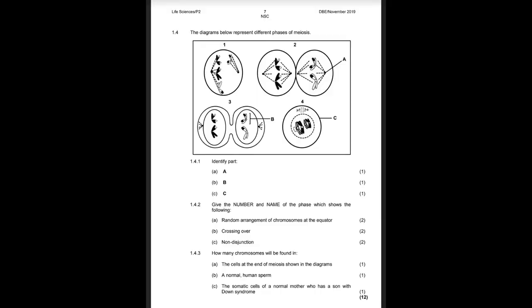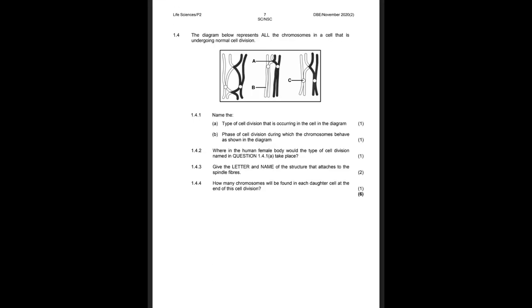The next thing that is always going to be in Question One is a meiosis question. I'd like to remind you that they've taken meiosis out of Paper One and included it only in Paper Two. For the meiosis question, they generally like to ask things around crossing over or identifying the phase shown in a diagram. The tricky part is they want to see whether you know the phase before or after the one in the picture — you need to know not only what phase you're looking at but what comes before and after it.